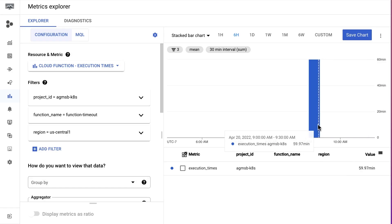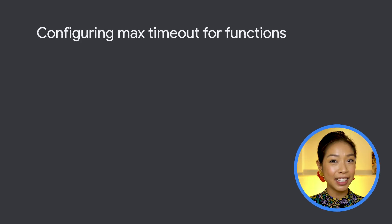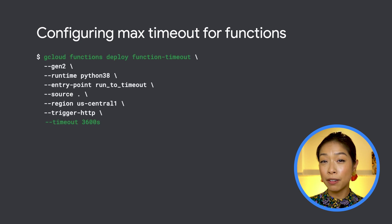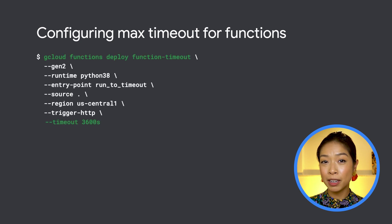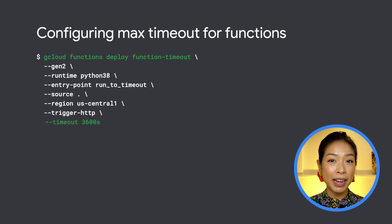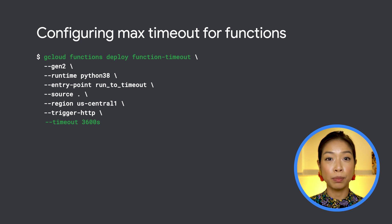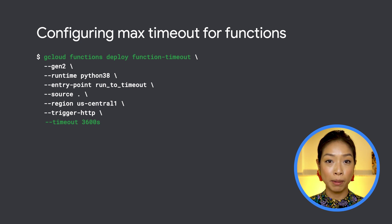We can also view execution times for our long-running functions in dashboards provided by Cloud Functions. If we look at how we configure this max timeout, we can do so by appending the timeout parameter at deploy time to override the default timeout of one minute.